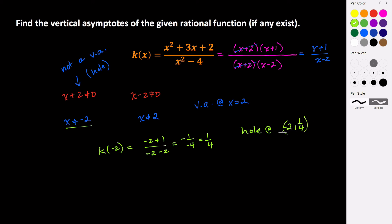So although it's not a vertical asymptote, it is a discontinuity. It's called a removable discontinuity, which results in a hole in our graph.